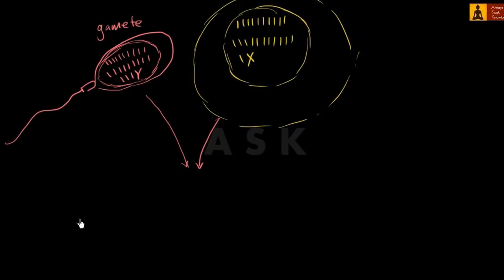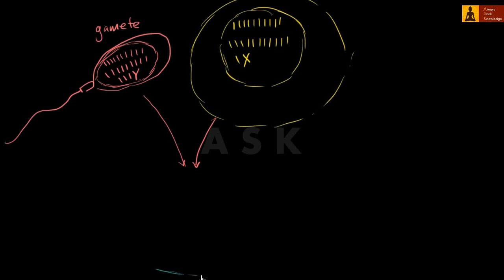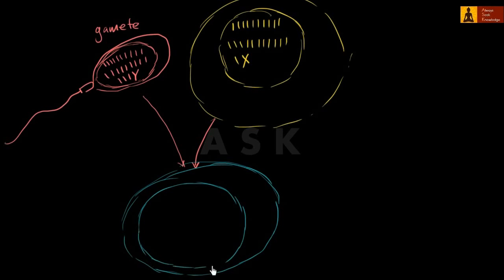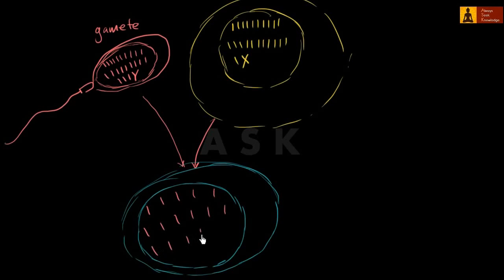So let me draw that. I'll draw it not quite at scale. Let me draw the nucleus of this zygote fairly large so that we can focus on the chromosomes in it — none of this is drawn to scale. You're going to have the 23 chromosomes from your father: 1, 2, 3, 4, 5, 6, 7, 8, 9, 10, 11, 12, 13, 14, 15, 16, 17, 18, 19, 20, 21, 22, and 23 — and then the 23 chromosomes from your mother.